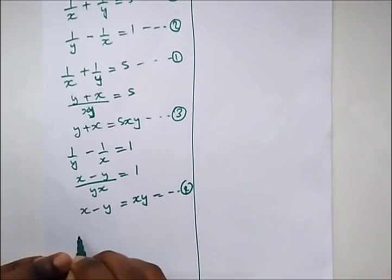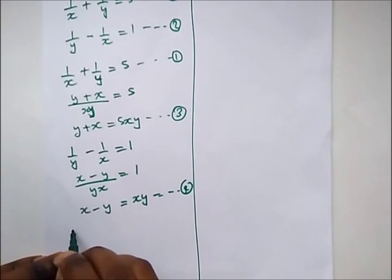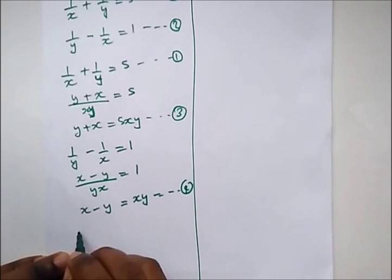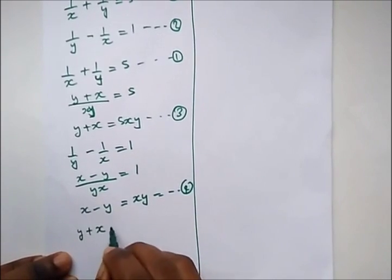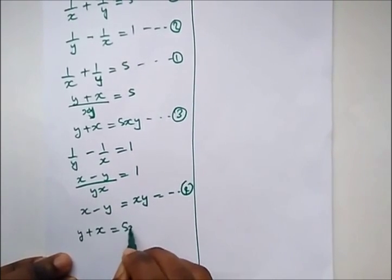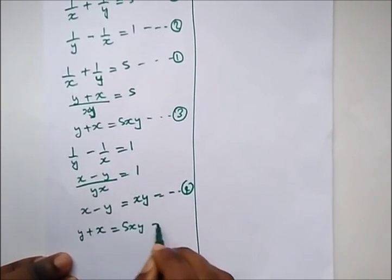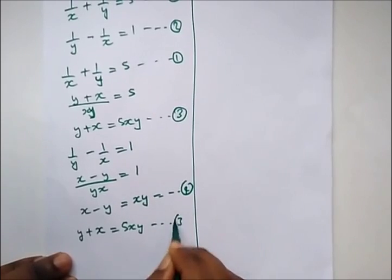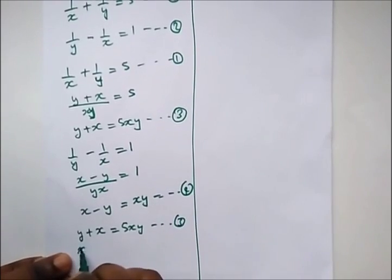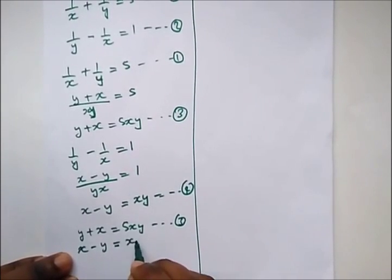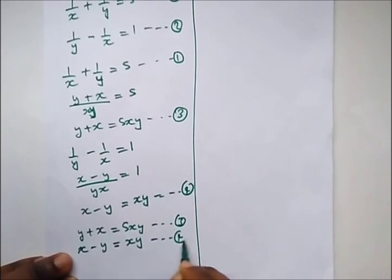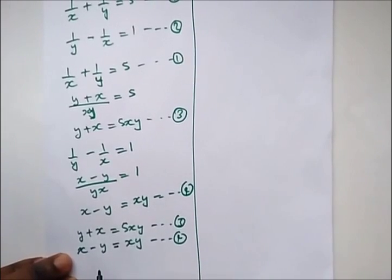To solve this, let's take equation three and equation four and perform the elimination method on them. We have y plus x equal to 5xy — equation three — and x minus y equal to xy — that's equation four.